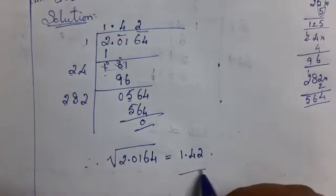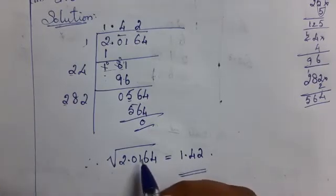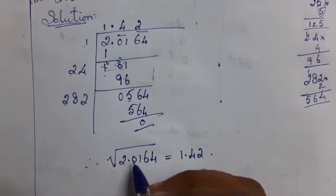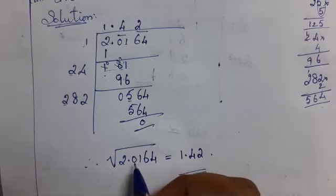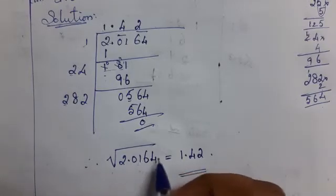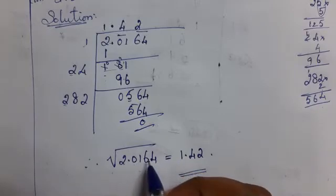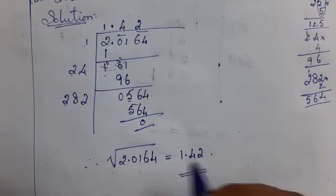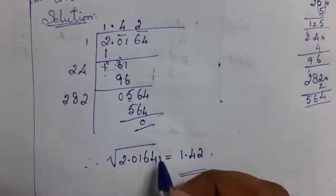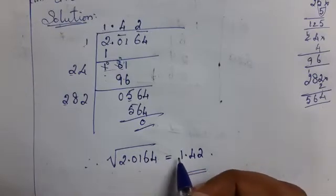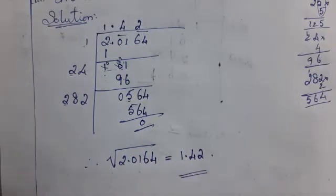Listen carefully. Finally, after the decimal, you must read only one digit at a time. After the decimal, you must read the digits 1 by 1: 0, 1, 6, 4. So 2.0164 is equal to 1.42.